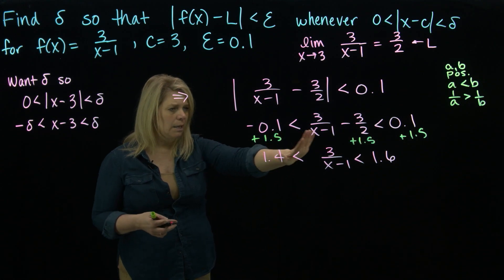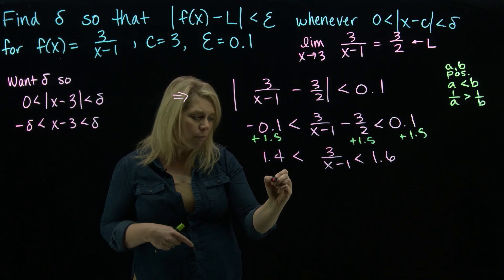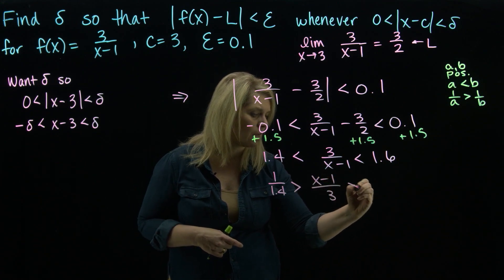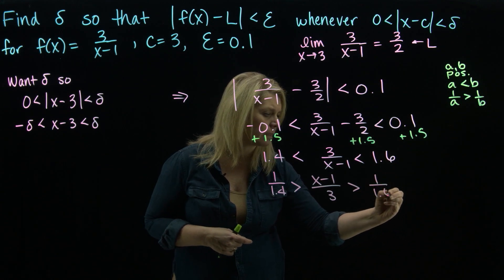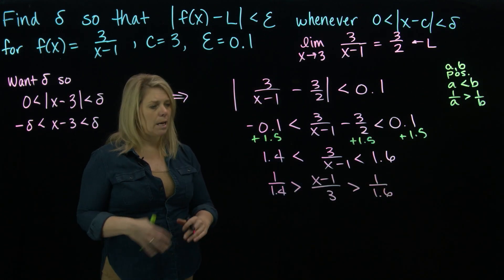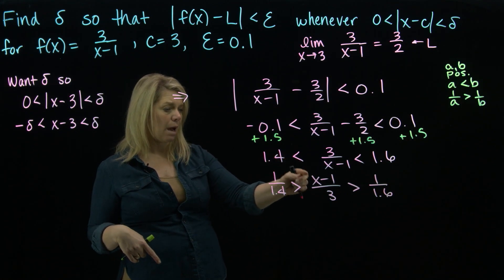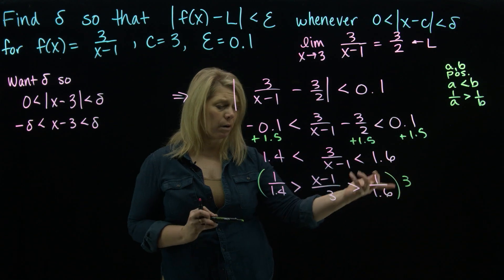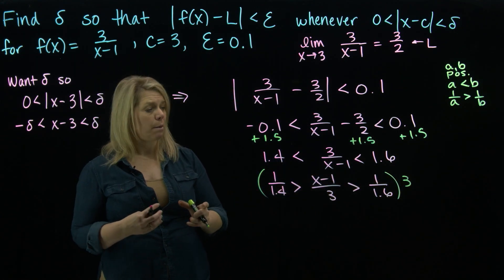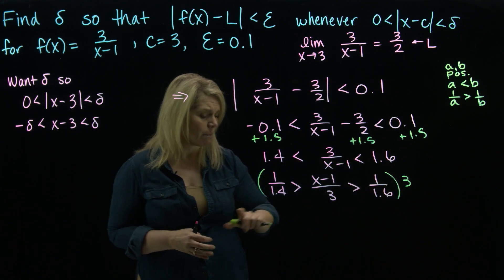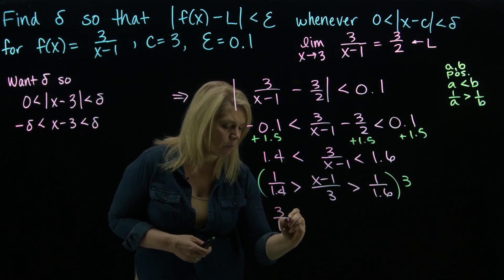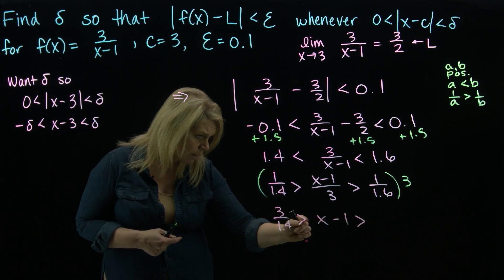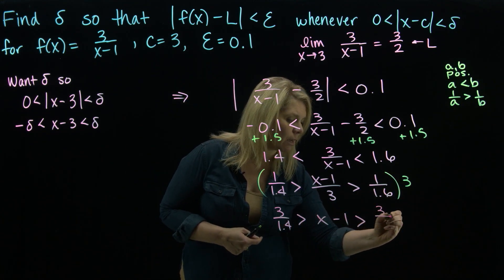Keeping my goal in mind, I'll multiply through by 3. Multiplying by a positive number preserves the inequalities — only multiplying by a negative causes changes. So we get: 3/1.4 > x − 1 > 3/1.6.